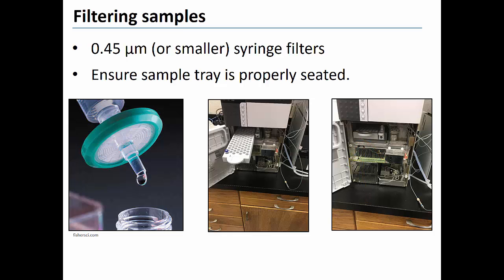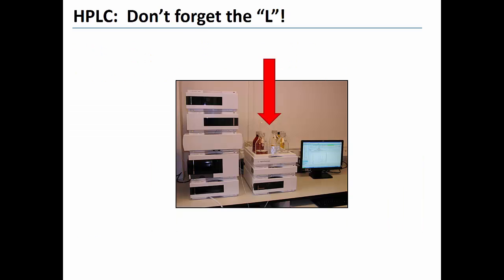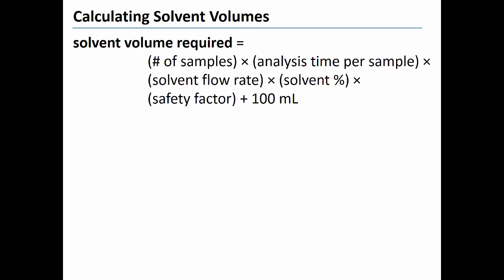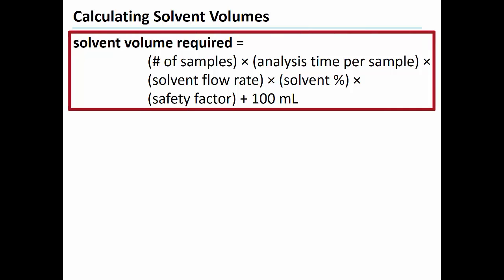An all too common mistake for HPLC users is running out of solvent. This is problematic because if a solvent level gets too low, the instrument will begin to pump air instead of solvent. Pumping air can damage columns and create flow obstructions in other parts of the instrument. Before beginning a batch of samples on an HPLC, it's important to estimate the total amount of solvent that you will need to complete that batch.